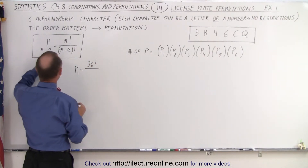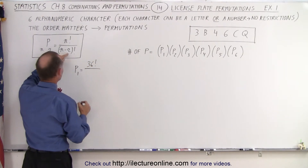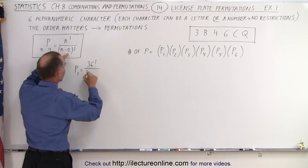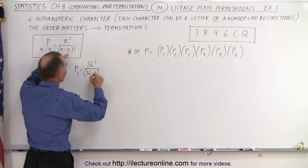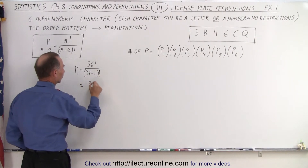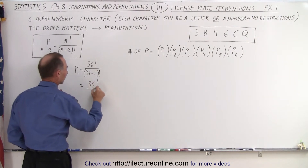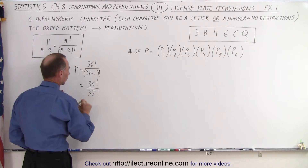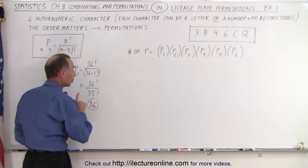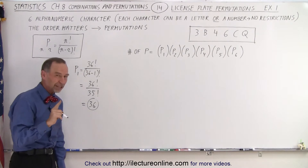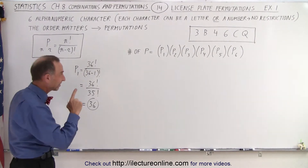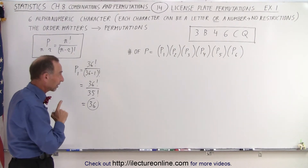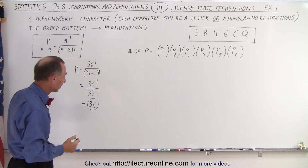Now n is going to be 36 because you have 36 different alphanumeric characters. So that's 36 factorial divided by (36 minus 1) factorial, which is 36 factorial divided by 35 factorial, and that equals 36. So the number of permutations for a single alphanumeric character is 36.